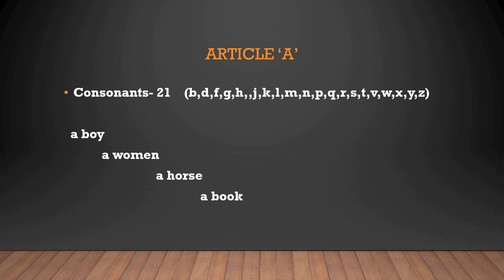And whereas here article a, it is used in front of the consonant words. So consonant, how many consonants do we have? We have 21 consonants and five vowels all together forms 26 alphabets. The 21 consonants are: B, D, F, G, H, J, K, L, M, N, P, Q, R, S, T, V, W, X, Y, Z. So these are the consonant letters.